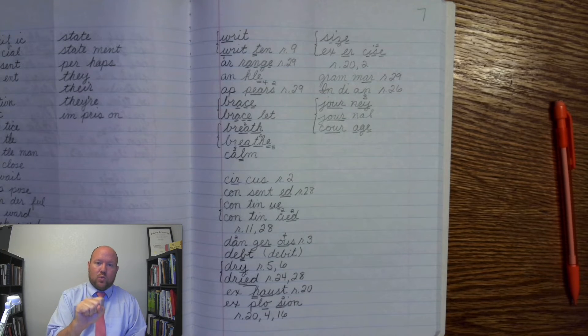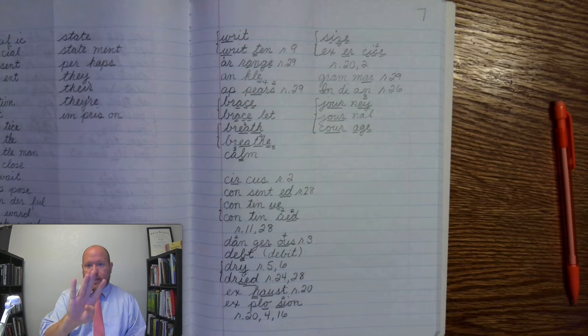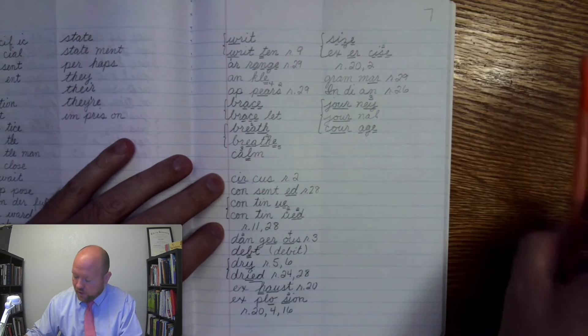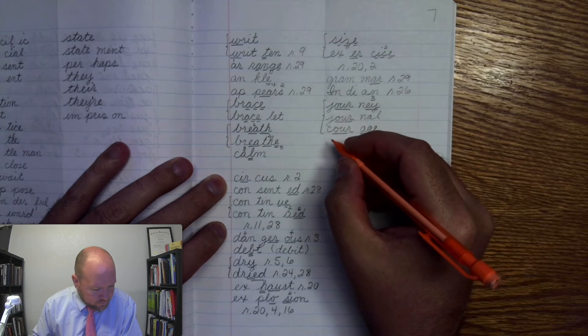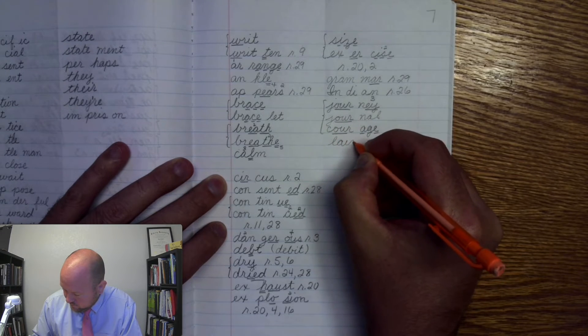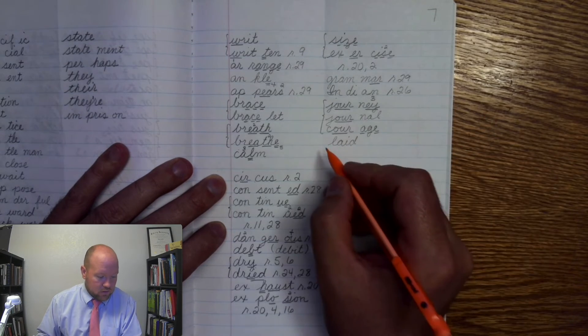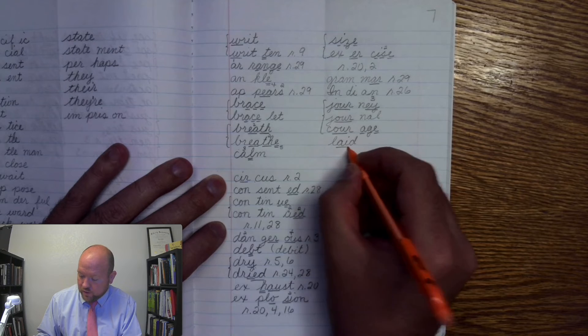But just know it comes from the base word lay. But we're changing the Y to an I and adding a duh. And it's irregular. Laid. Laid. Base word laid. L-A-I-D. Laid. We're using the AI phonogram. Laid.